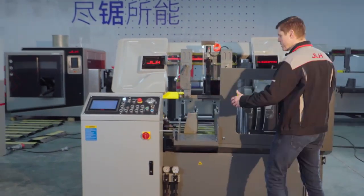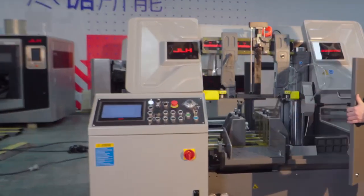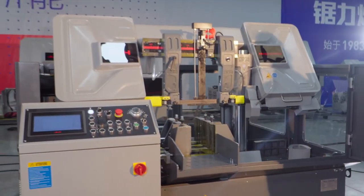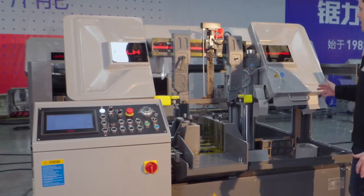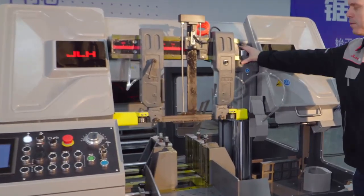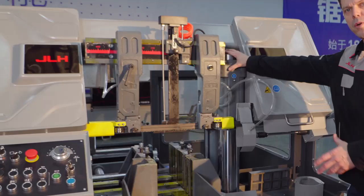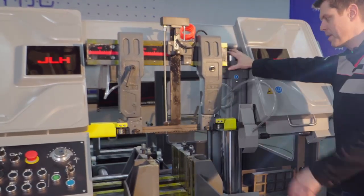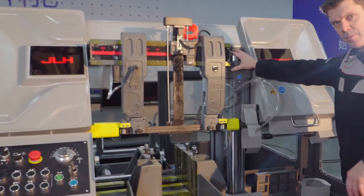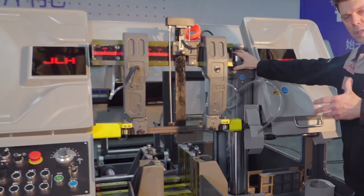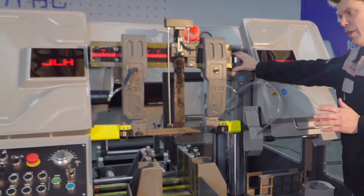When I opened the door, we made it again user and service friendly. You can see you recognize the double column, the main big column to support the complete weight of the saw frame. And on the back side, there's a small column that basically guides the saw frame down.